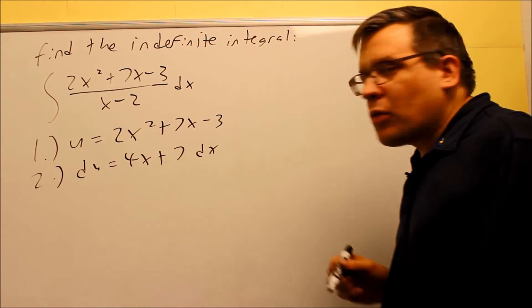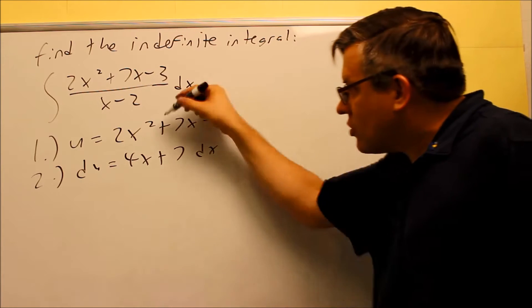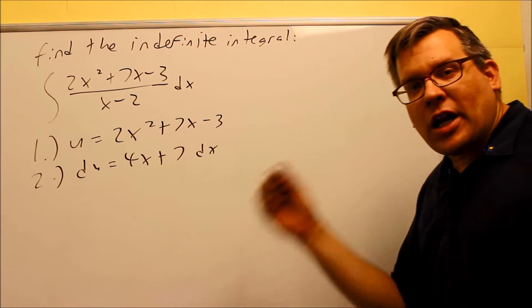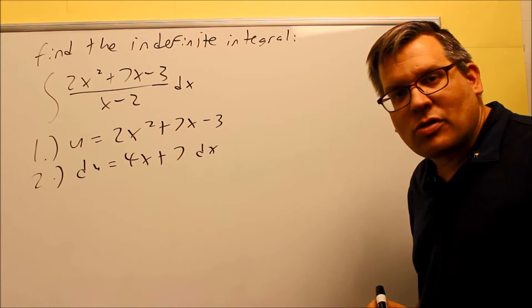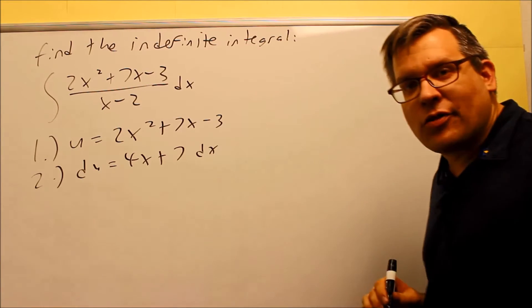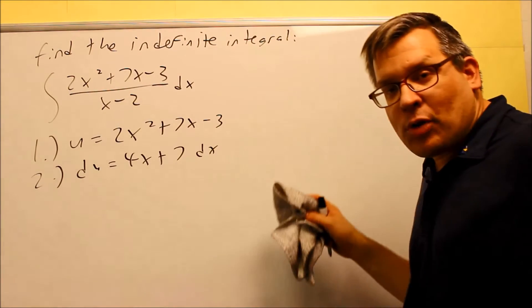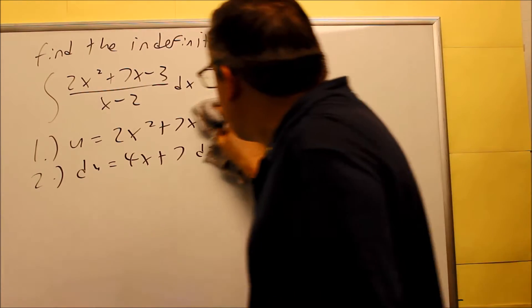So when you're working through a problem and that happens, you either have to change the u that you've already picked, or you might have to apply a different process in order to solve for it. In this case, we're going to apply a different process since we haven't done any of these type of problems before like this so far.